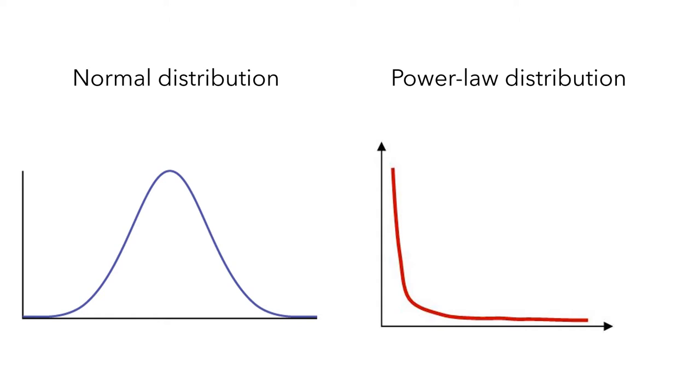In the power law distribution, there is no peak, and the long tail stretches on and on, so there is no scale. We call it scale-free.